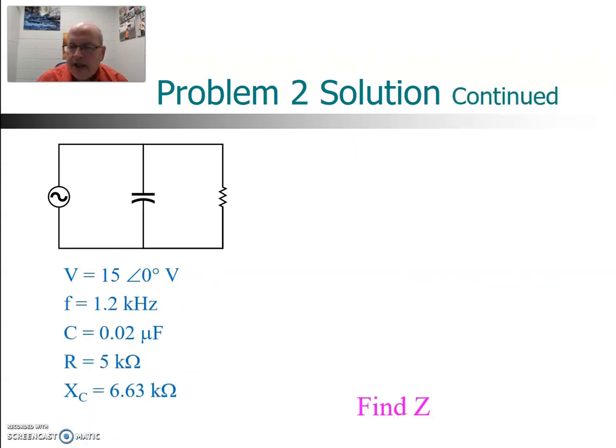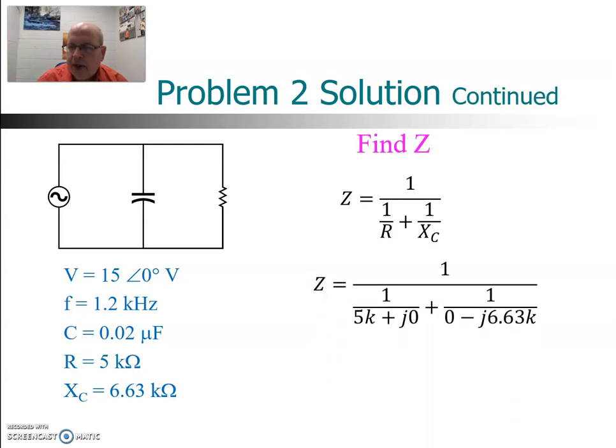Put that aside and now we can find the Z by using reciprocal of the sum of the reciprocals or if you remember from the last problem we could also do product over sum. Either case you should get 3.99 kiloohms and angle of minus 37 degrees.